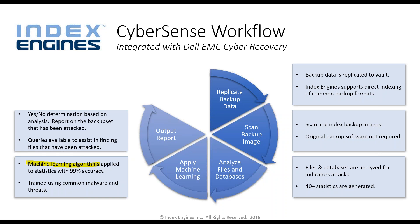A red light means something's wrong. It will report on the backup set that has been attacked and on the type of attack vector used. Queries and reports are available to help find the files or databases that have been attacked. If a red light situation occurs, it is reported to the cyber recovery dashboard, which will provide an alert saying something has happened that requires further investigation, and will provide guidance on what files or databases have been corrupted.